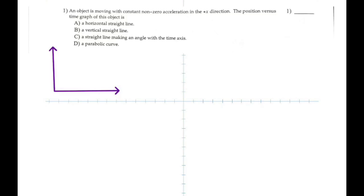An object is moving with constant non-zero acceleration, meaning it has an acceleration and it's moving in the positive x direction. This is one-dimensional motion. You are asked to draw the position versus time graph, where time is on the x-axis and position is on the y-axis. Because this is an accelerating object, it's not going to be a straight line — the position-time graph is going to be curved, because the slope of the position-time graph gives you the velocity.